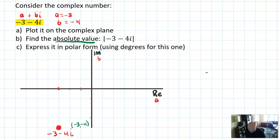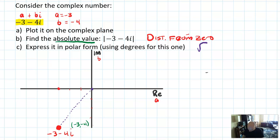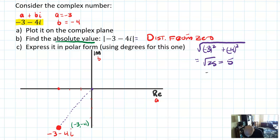Next, find the absolute value of negative 3 minus 4i. Absolute value is a little different — it doesn't just make everything positive. It is not 3 plus 4i. What absolute value means is distance from 0. The distance from 0 here is two-dimensional, so you have to solve it using the distance formula: the square root of 3 squared plus 4 squared, which ends up being the square root of 25, which is 5. So the absolute value of negative 3 minus 4i equals 5.